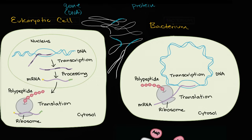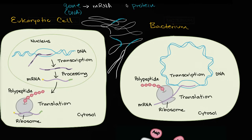This is often called the central dogma of biology. We already saw in the video on transcription that the first step is to go from the gene to messenger RNA — the RNA, the messenger RNA, you can view as a transcript. We have rewritten the information now as RNA. And then the next step, which we're going to dive into in this video, is going from that messenger RNA to protein.